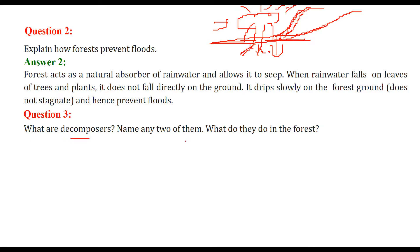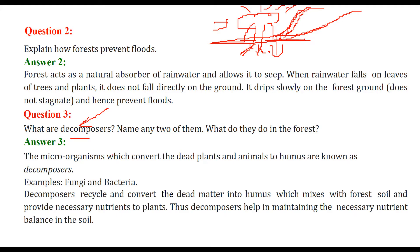Next: name any two decomposers and what do they do in the forest. Decomposers are very minute microorganisms, and certain insects also. They work on organisms that have died — plants and animals. The microorganisms that convert dead plants and animals to humus are known as decomposers. Fungi and bacteria are examples.